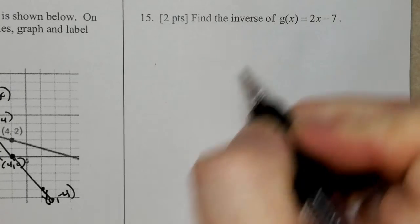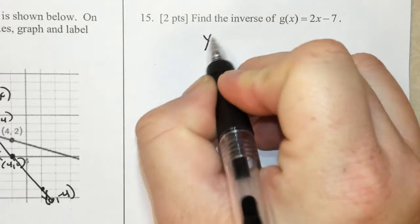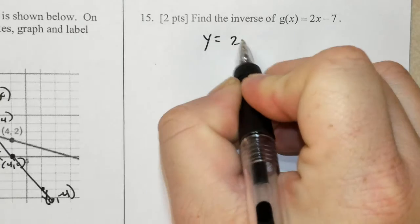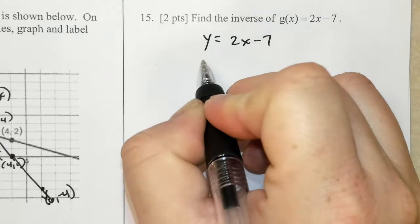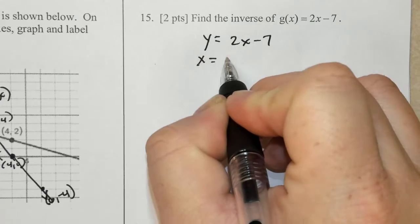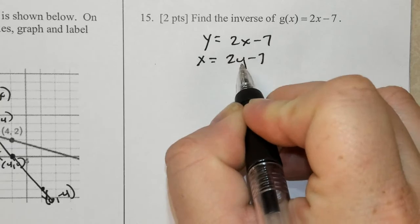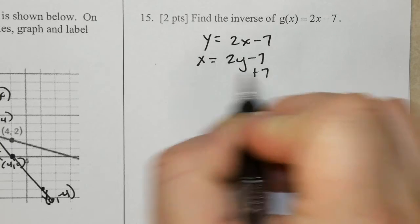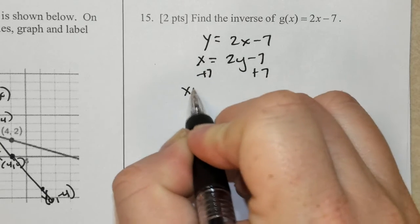Find the inverse of G of X. Remember, G of X is really like a Y. The first step I'm going to do is swap the X and Y. And now I'm going to isolate the Y, doing PEMDAS backwards.